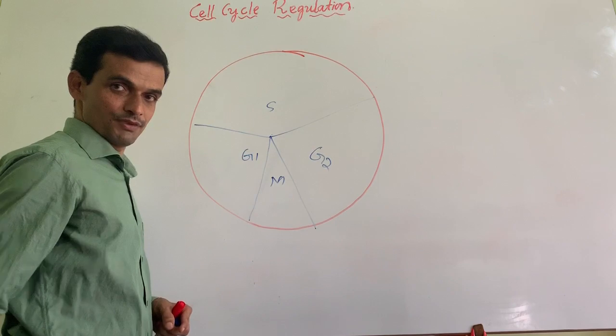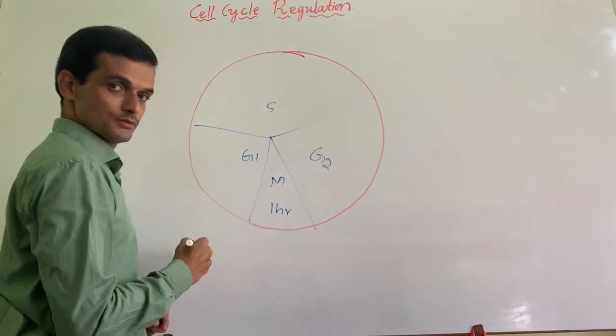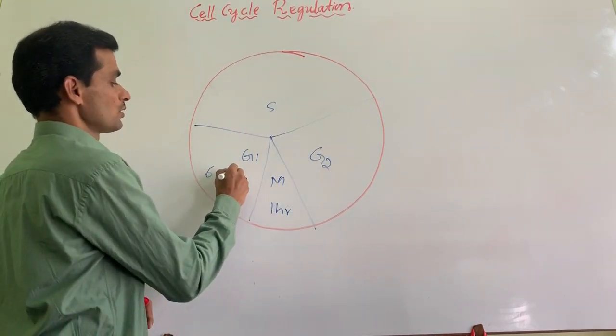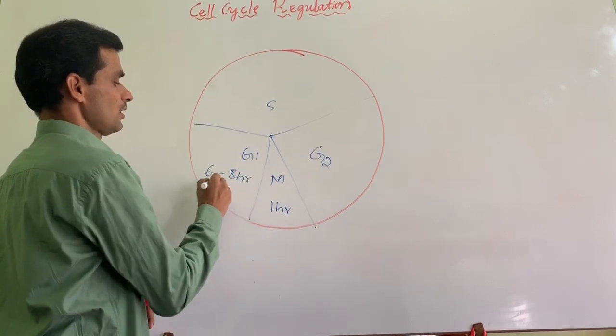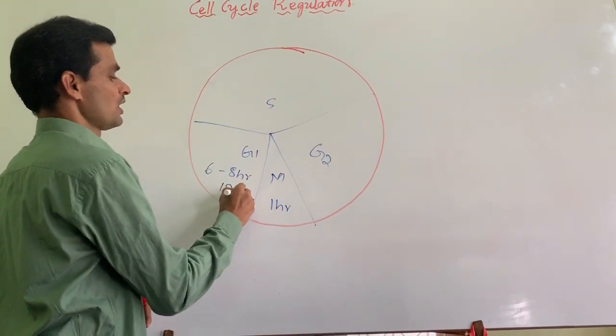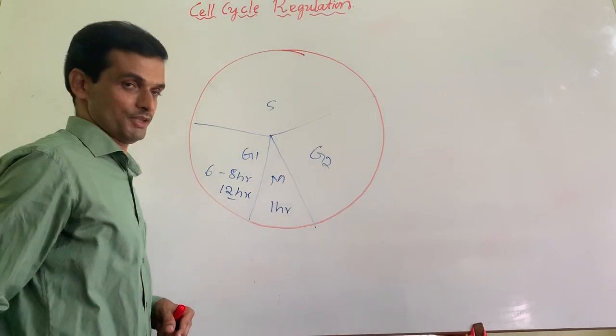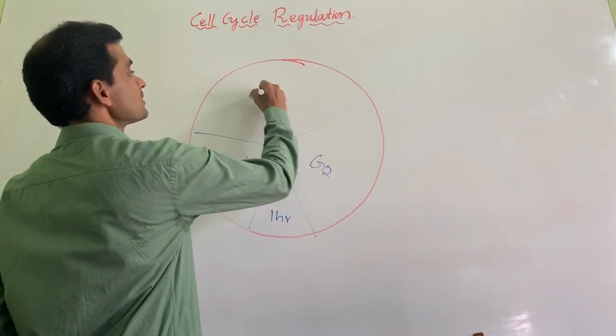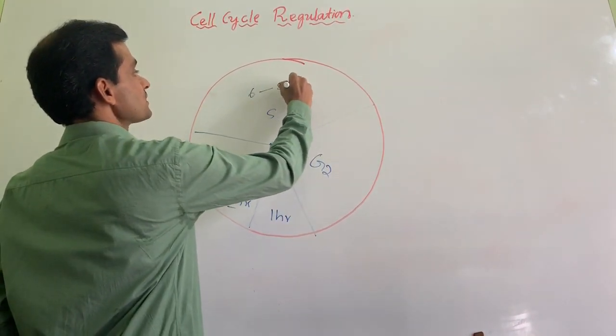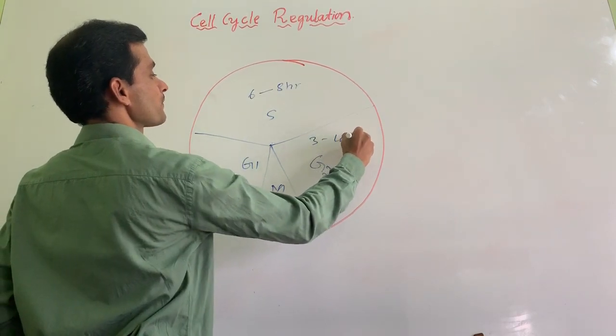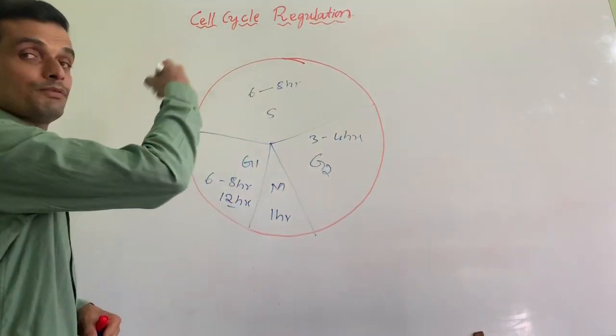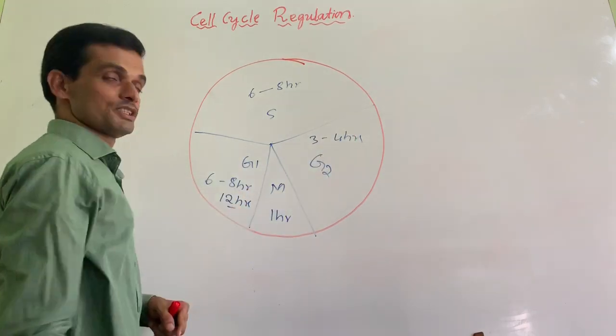This is the cell division phase, it will take just one hour. G1 can take 6 to 8 hours or sometimes 6 to 12 hours because this is the most variable phase. S phase is about 6 to 8 hours. G2 is around 3 to 4 hours. Now, I am not talking about different events associated with the cell cycle.